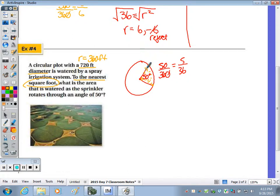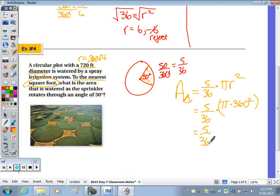I need to do 5 out of 36 times the full area, pi r squared. So 5 over 36 times pi times 360 squared, which equals 5/36 of 129,600. 5/36 times 129,600 is 18,000 pi. Typing that into the calculator, we get 56,548.66776.